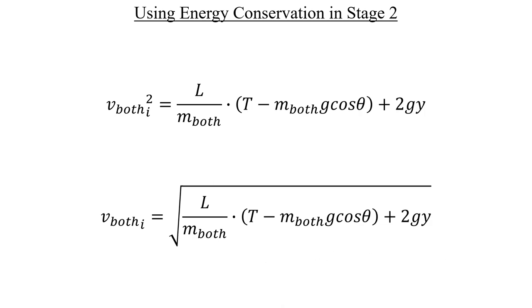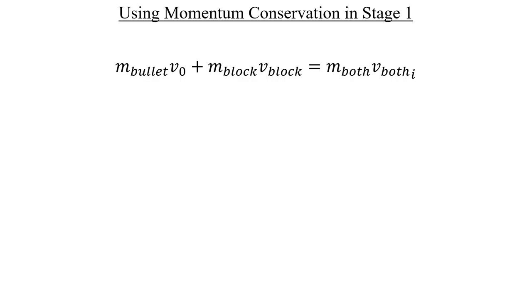We have to switch gears and investigate the conservation of momentum in stage one now. Here's the individual momenta of both objects on the left and the momentum sum during the exact moment of the collision on the right. Since the block wasn't initially moving, we can eliminate the second term on the left and then simplify everything to this. If we divide both sides by the mass of the bullet, we finally get an equation for its initial velocity. All the quantities on the right are known and there's no simplification left.